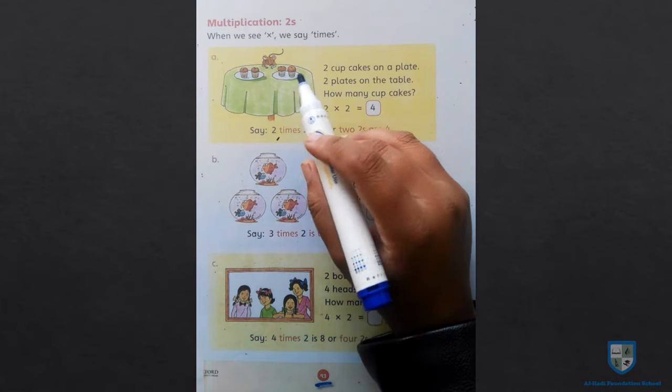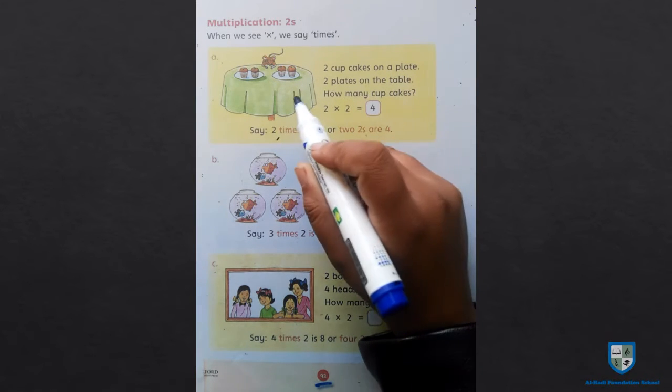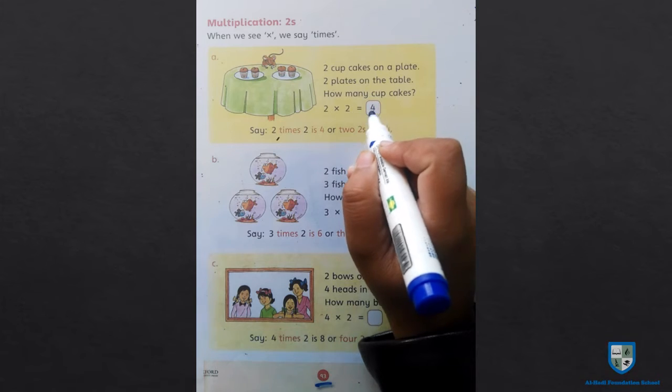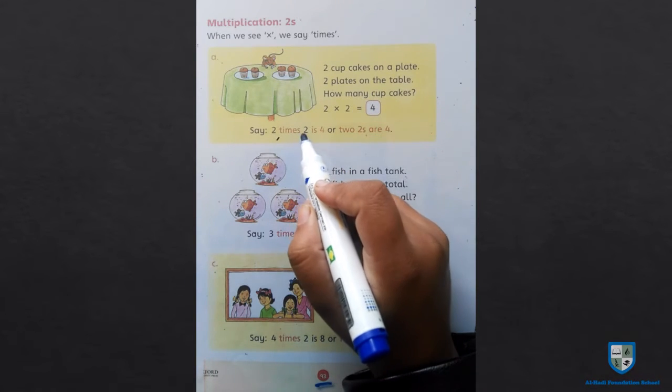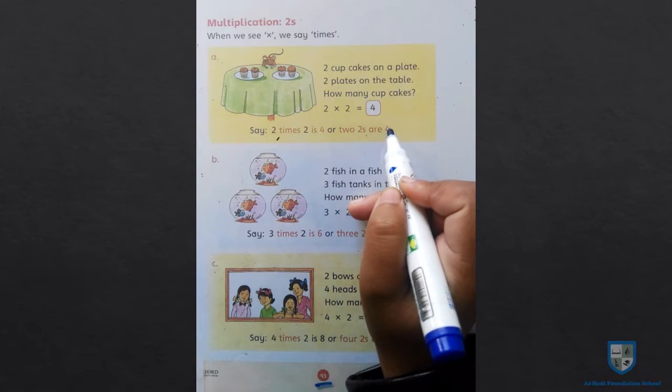So now we have to see how many cupcakes there will be. How many cupcakes? 2 multiplied by 2 is equal to 4. 2 times 2 is 4, and 2 twos are 4.